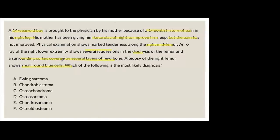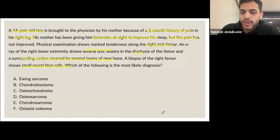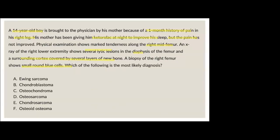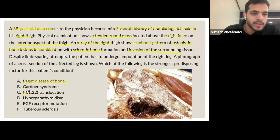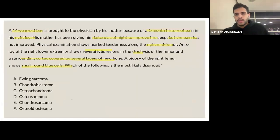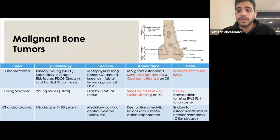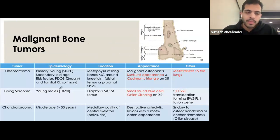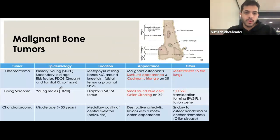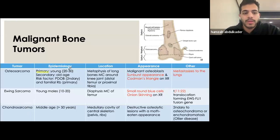The answer is Ewing sarcoma. The onion-skin appearance on X-ray and small round blue cells on biopsy are classic findings. The important translocation for Ewing sarcoma is t(11;22). Key demographic points: osteosarcoma typically affects young patients, and Ewing sarcoma affects even younger patients — our patient was 14. Chondrosarcoma is another malignant tumor seen mostly in middle age.